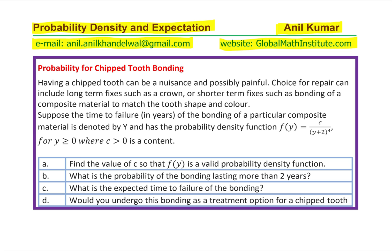The parts of the question are: (a) Find the value of c so that f(y) is a valid probability density function. (b) What is the probability of the bonding lasting more than two years? (c) What is the expected time to failure of the bonding? (d) Would you undergo this bonding as a treatment option for a chipped tooth? Excellent and amazing word problem.